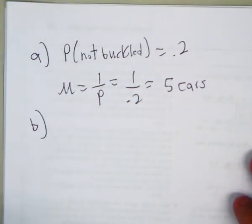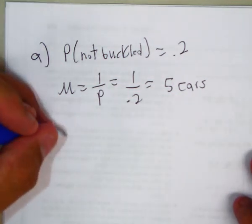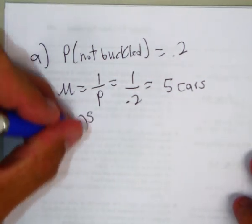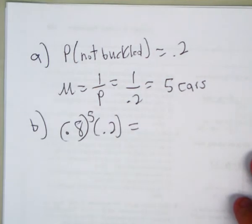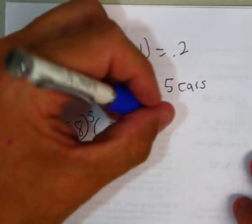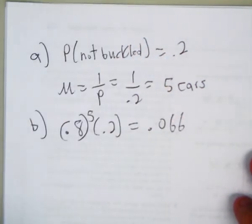B says what's the probability the first unbelted driver is in the 6th car stopped? Well, that means that the first 5 had their seatbelts on and then the 6th person did not. So if we do that, we get 0.066.